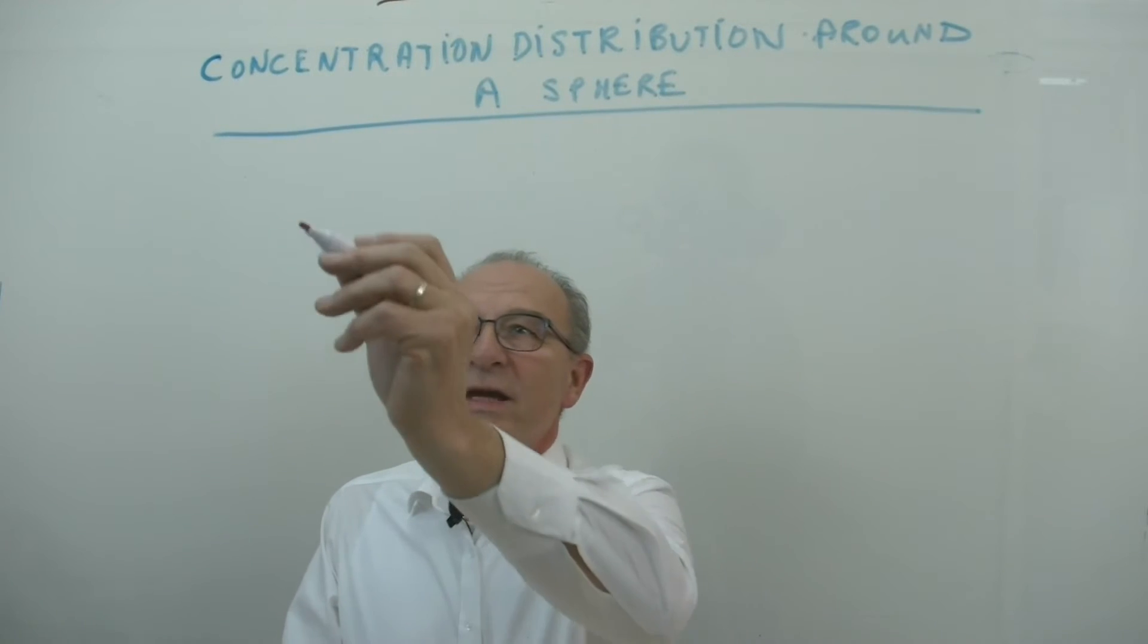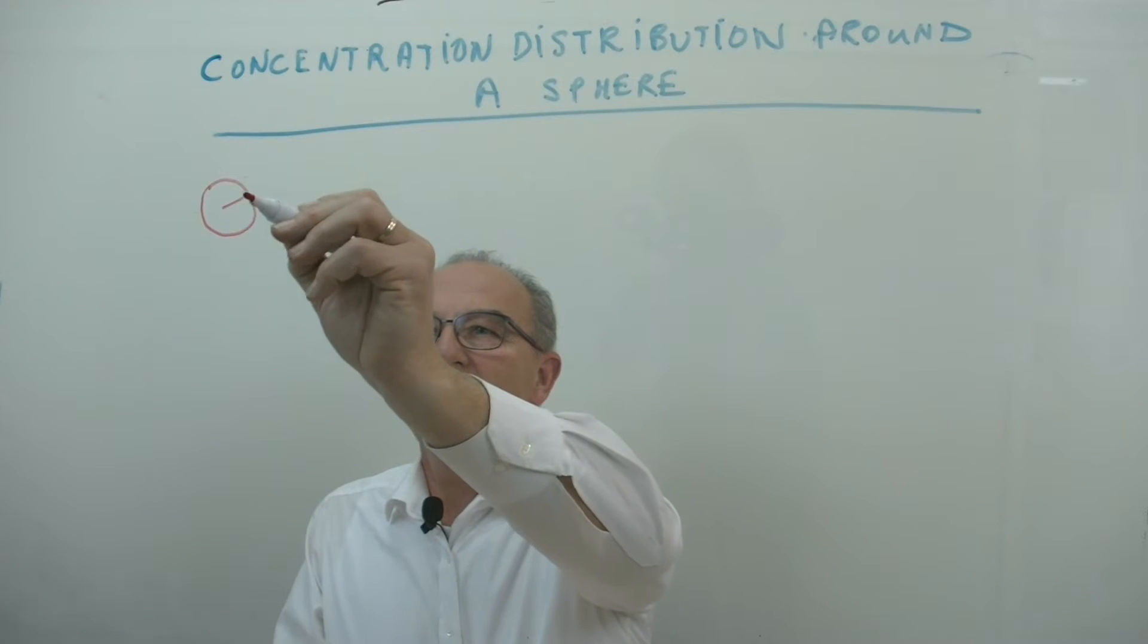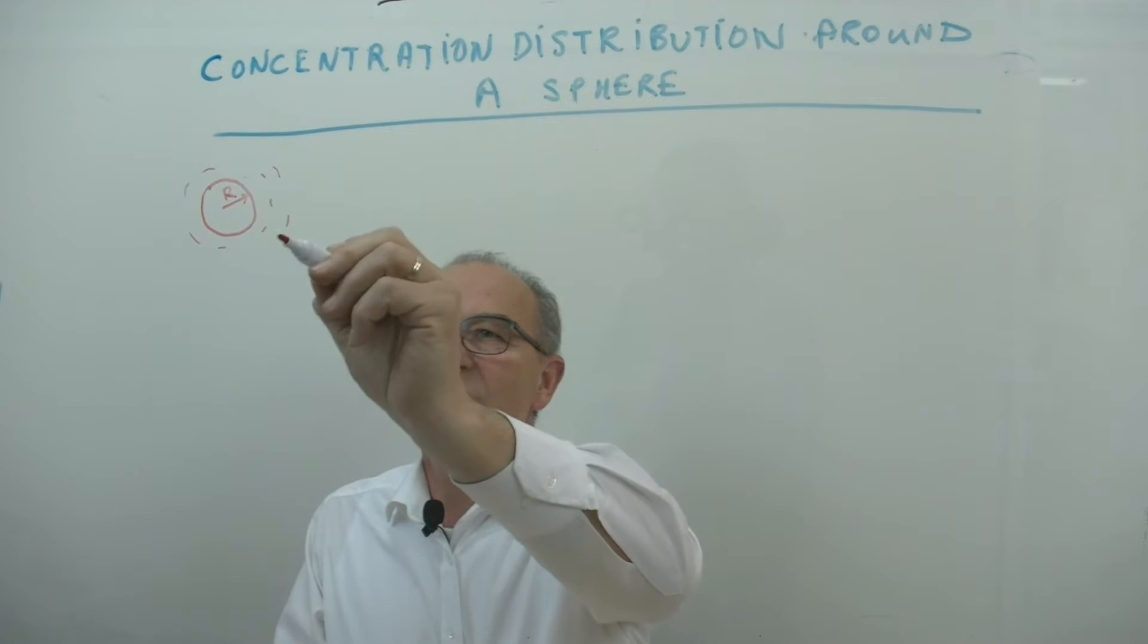Hi, I'll give you now an example of a pill with a radius R which diffuses into the surroundings.